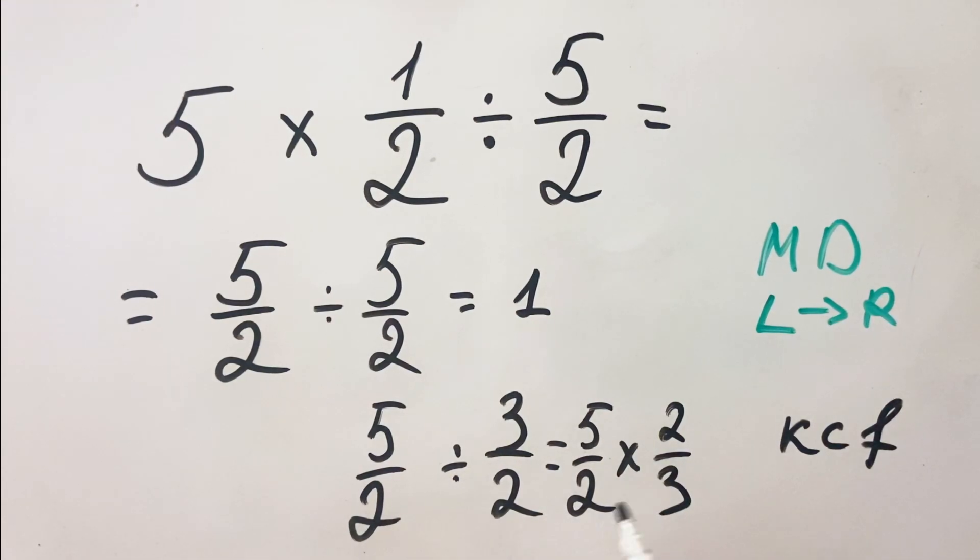So it's 2 over 3. In this case you divide it and you get 5 over 3.